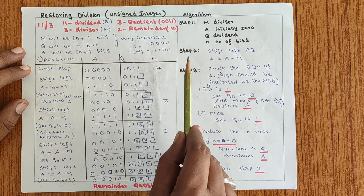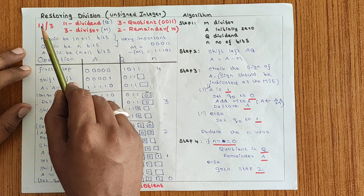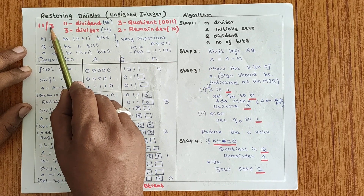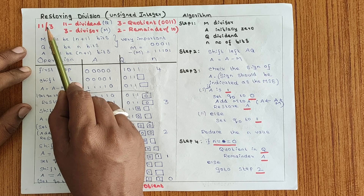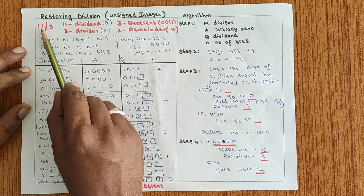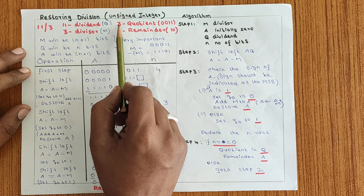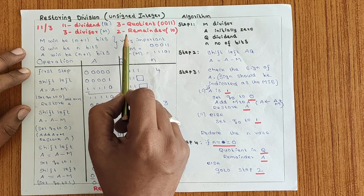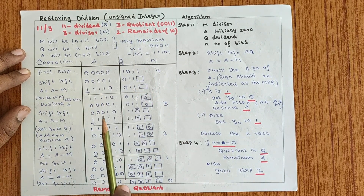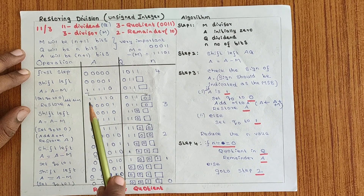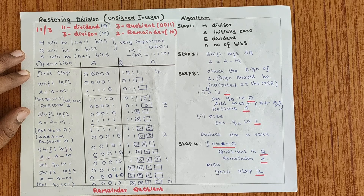This is slightly different from the Booth algorithm. Let us take an example as 11 divided by 3. 11 is a dividend and 3 is a divisor. If we perform 11 divided by 3, you will get the output as 3 as a quotient and 2 as the remainder. Later we will perform by using restoring division method and you will get the quotient as well as the remainder.